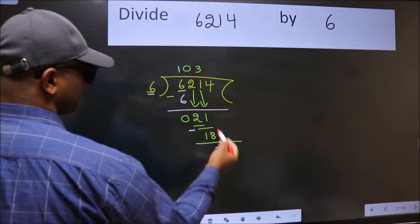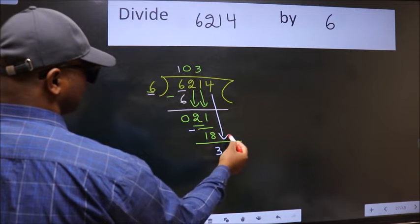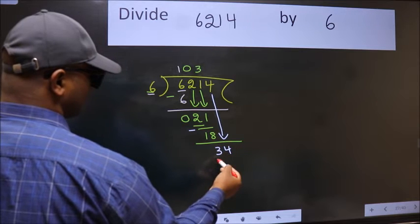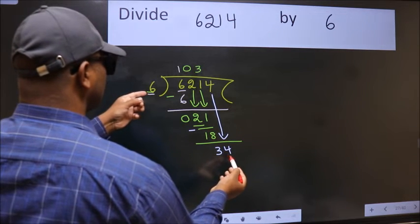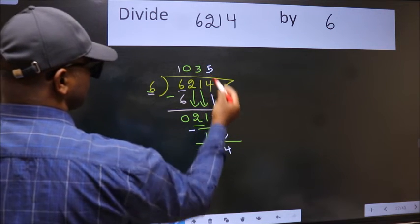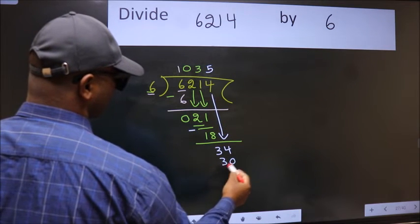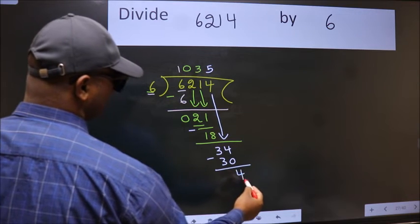After this, bring down the beside number. So 4 down. 34. A number close to 34 in the 6 table is 6 fives 30. Now we subtract. We get 4.